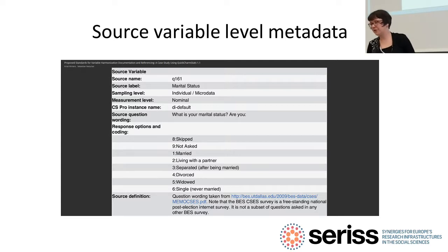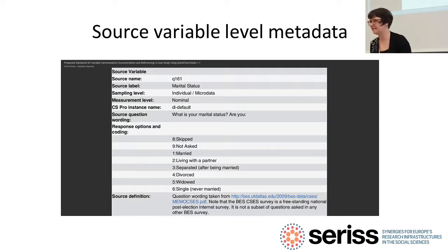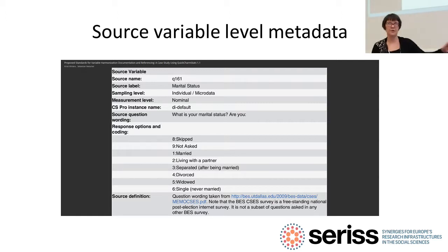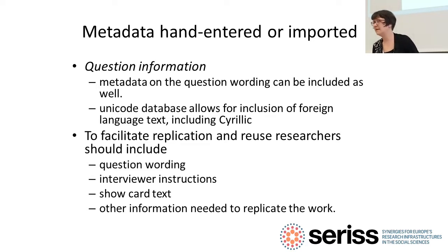In the case of the British study, we have basically the same information, except instead of a concept label in the question source metadata, we actually have a question — the wording given to respondents through the internet: 'What is your marital status? Are you...' followed by the options you can see on screen. I also put notes on where the question wording could be found. At the time the study was deposited with the UK Data Archive, so I included references so people would know where to access the original study and documentation.